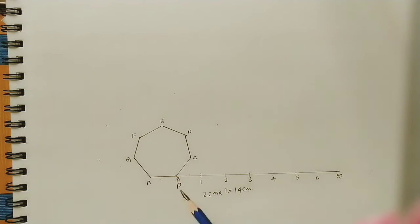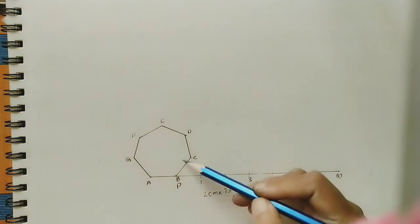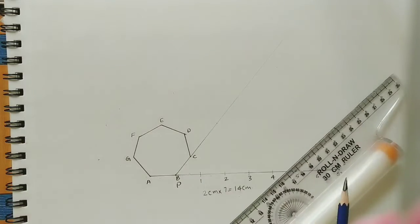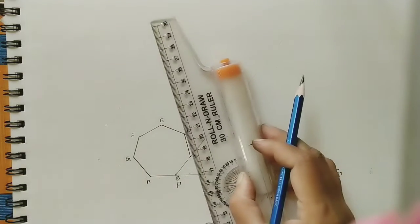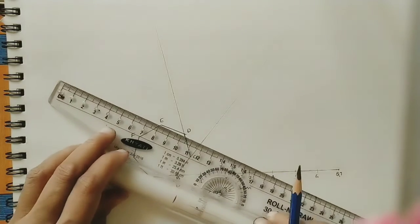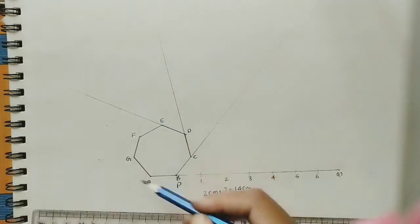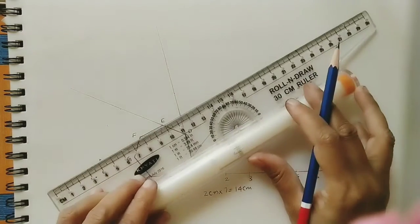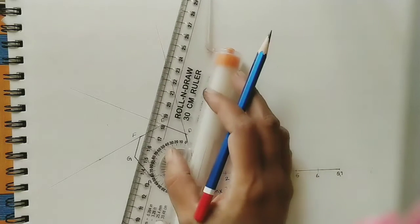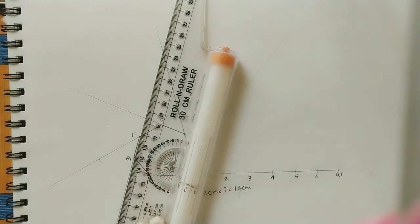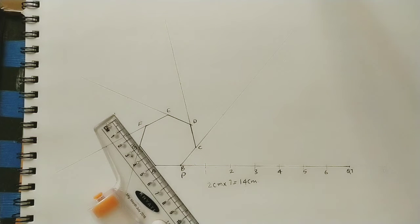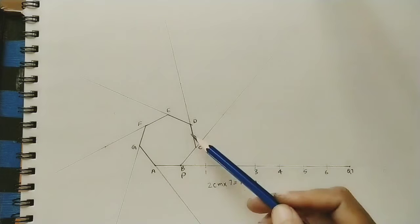After dividing the thread into seven parts, draw thin construction lines extending from each side of the polygon: from sides AB, BC, CD, DE, EF, FG, and GA. These construction lines should be lighter than the main polygon and involute lines.